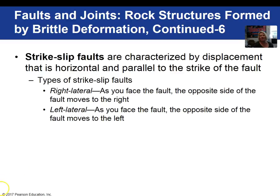We can differentiate between two strike-slip faults: right lateral and left lateral. The way you can tell if you have a right or left lateral is you stand and face the fault, look across the fault, and the direction that that block moves — whether it be right or left — tells you if it's a right or left lateral strike-slip fault.